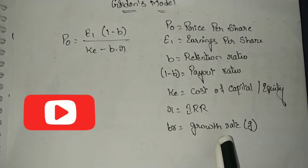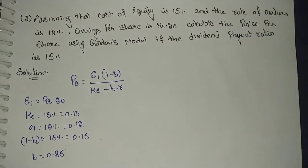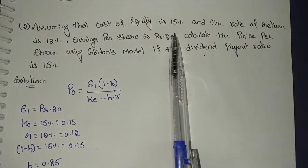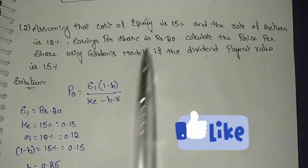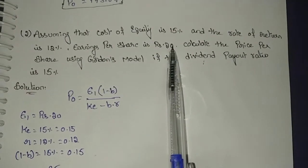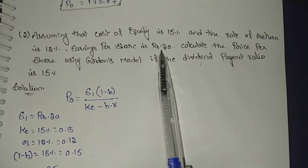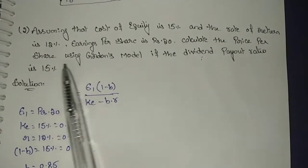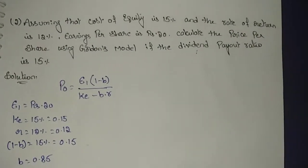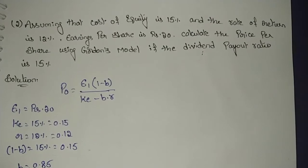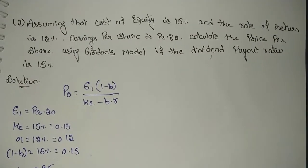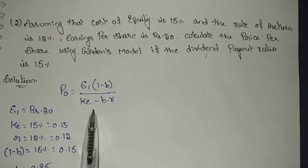Let us explain Gordon's Model using the formula with an example. The cost of equity ke is 15%, the rate of return r is 12%, earnings per share E1 is rupees 20, and they are asking us to calculate the price per share using Gordon's Model if the dividend payout ratio is 15%.